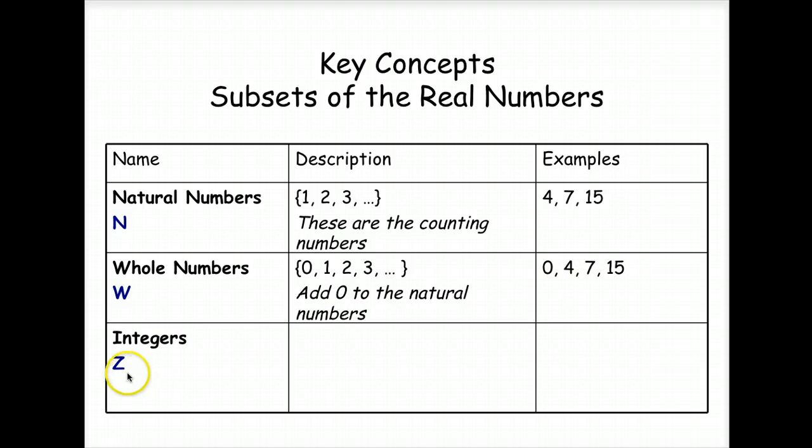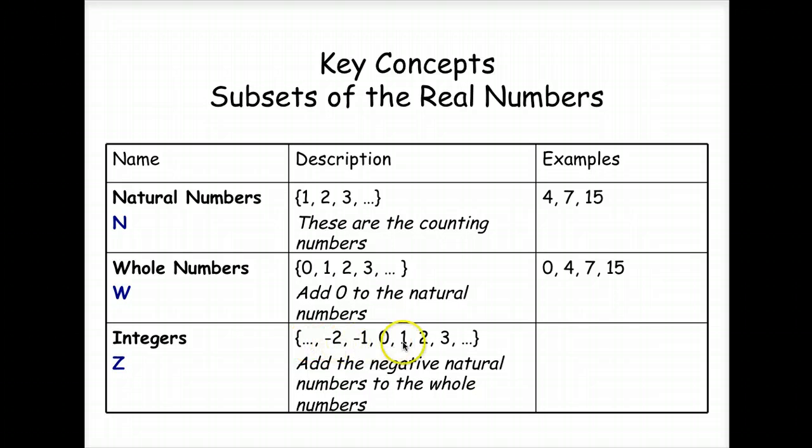Integers can be abbreviated by using the letter Z. And there they've got all the negative numbers, natural numbers, as added to all the whole numbers. So we take the whole numbers and we add negative natural numbers to them. Examples, negative 15, negative 7, negative 4, 0, 4, 7.